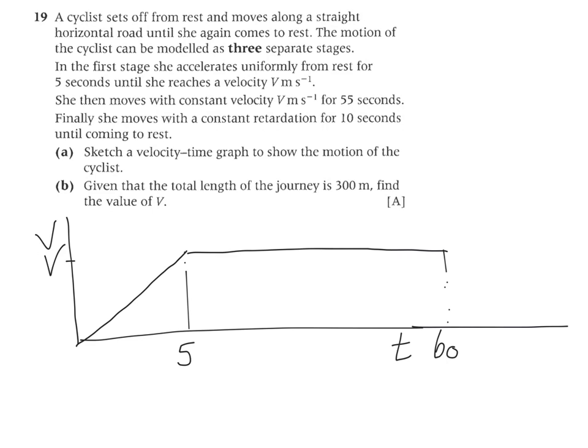And then a retardation, so a deceleration for 10 seconds until she has a velocity of zero again. So that is going to be 70. That's the sketch of the velocity time graph right there.